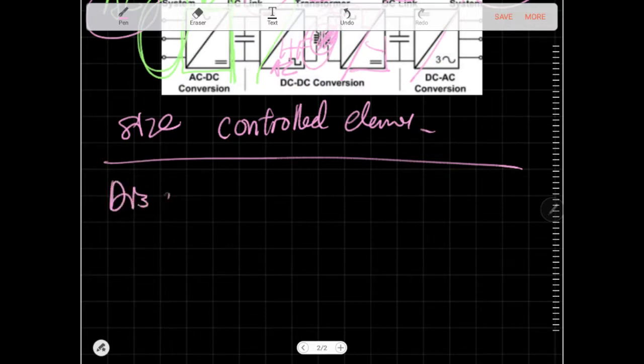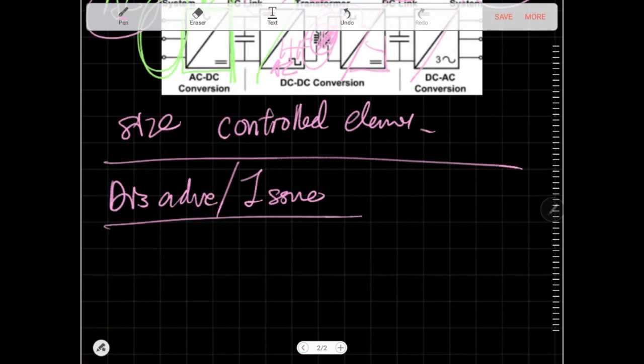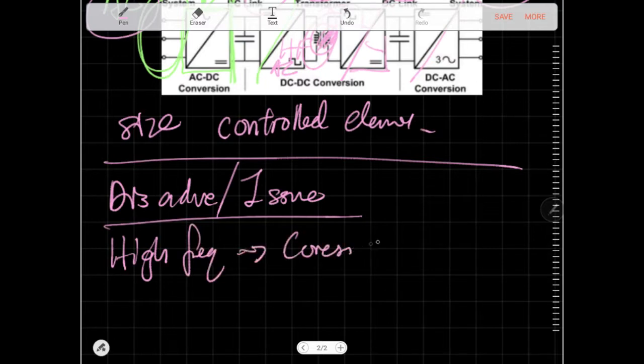So look at some disadvantage as well. What are the main issues? Disadvantage and issues. High-frequency, because we look into high-frequency related issues. High-frequency issues, core loss. There are quite a lot of core losses when you're doing high-frequency.